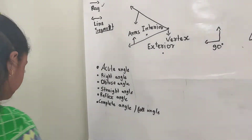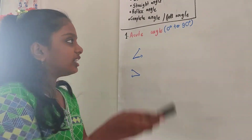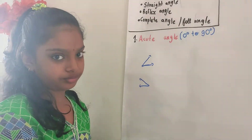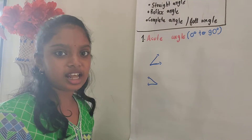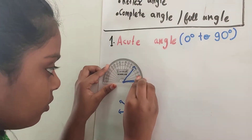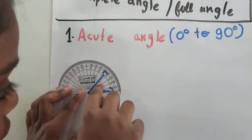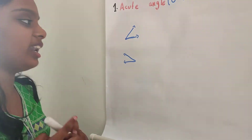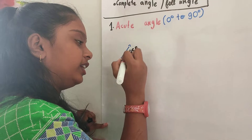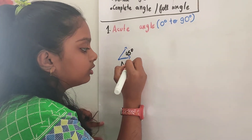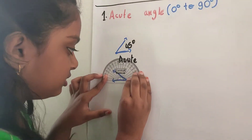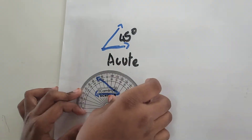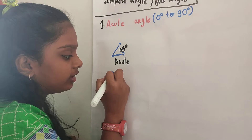Now, let us see the acute angle. An acute angle should be between 0 to 90 degrees. Let us measure this — I think you will get it correctly. It is showing 45 degrees. So, is this an acute angle or not? Yes, it is an acute angle — 45 degrees. Let us measure this one too. This is showing 40 degrees, so this is also an acute angle.